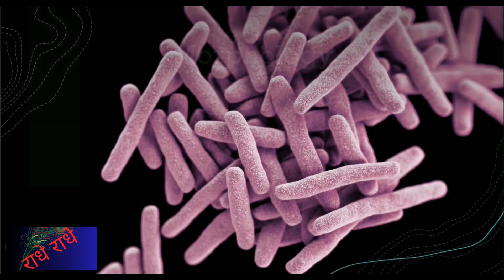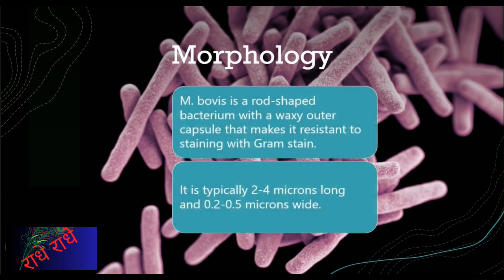M. bovis has a resistant outer capsule created by mycolic acids, which is composed of various long-chain fatty acids. It measures 2 to 4 microns in length and 0.2 to 0.5 microns in width. It also features lipoarabinomannan, a complex glycolipid that is indispensable for the survival of the bacteria.